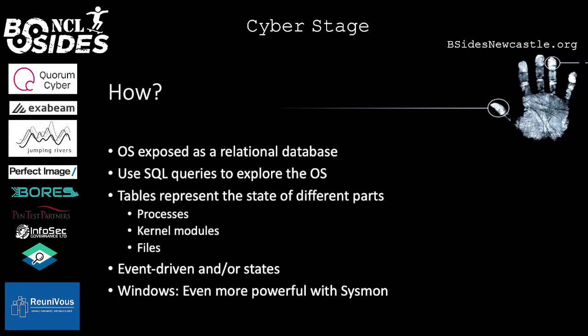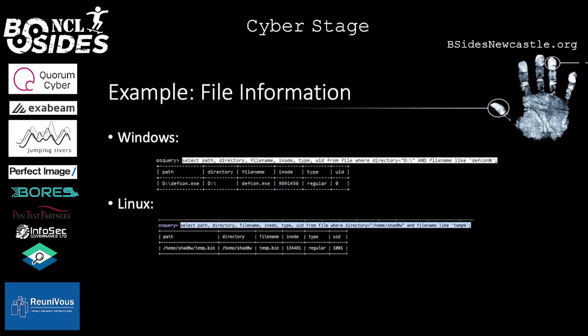The first example I'd like to show is how you can get file information. Since OSQuery runs on multiple different operating systems, the output is almost the same. In this example I'm selecting files in a certain directory where the filename contains a certain word. The output is almost exactly the same across platforms — you have the path, directory, filename. The only difference between Windows and Linux is the UID field: on Linux it shows the user ID of the account owning the file, while on Windows the UID is just zero.